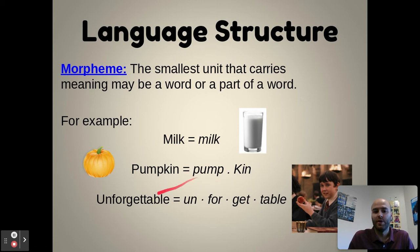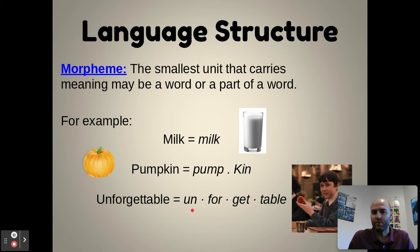Or take unforgettable — it has four morphemes: un, for, get, and table. You might wonder why un counts as a morpheme. It's because it can change the meaning of a word when you add it, so it counts as a morpheme.